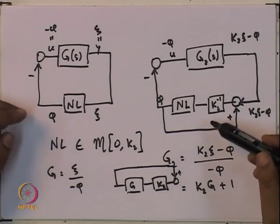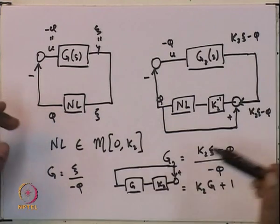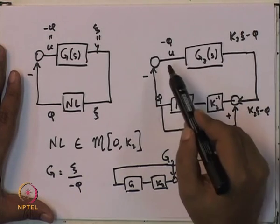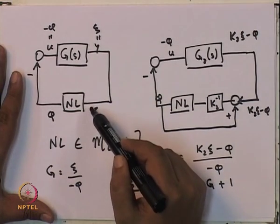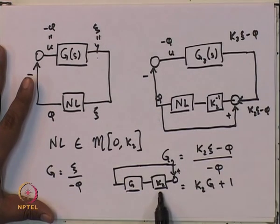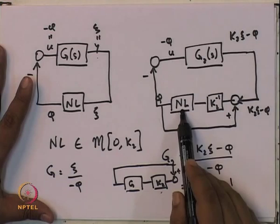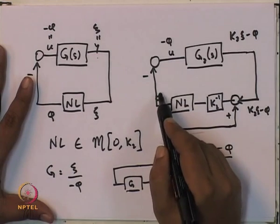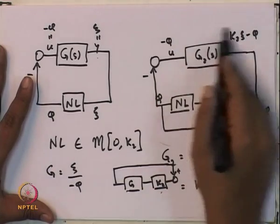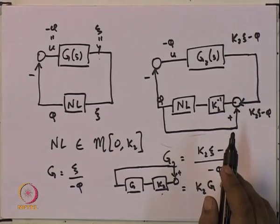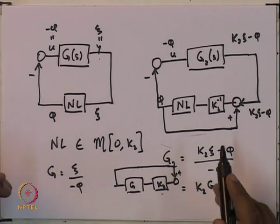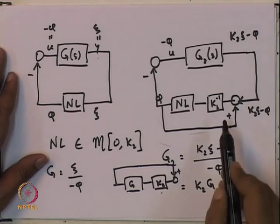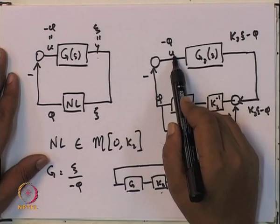There is a symmetry: in the nonlinearity we used k2-inverse and positive feedback, so G gets modified with gain k2 and a feedforward. Comparing with the k1-infinity sector, where a feedforward in the nonlinearity caused a feedback in the linear plant — here a feedback in the nonlinearity causes a feedforward in the linear plant.